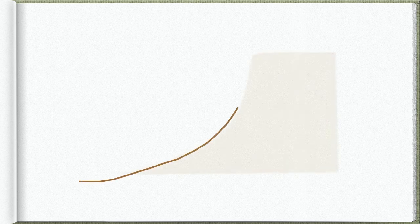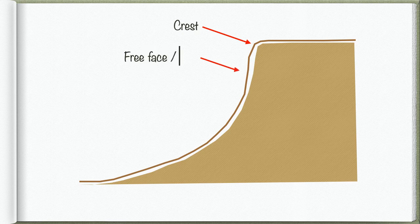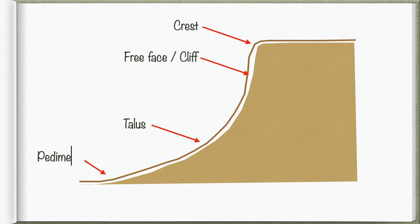Let's revise the different slope elements we find with topography associated with horizontal strata. Here is a diagrammatic shape: at the top, a concave slope — the crest. Then a steep slope — the cliff or free face. Then a constant slope — the talus. And finally a very gentle slope — the pediment. That concludes our examination of the photo book looking at features associated with horizontal strata.